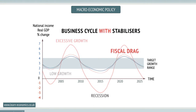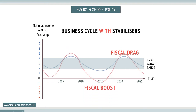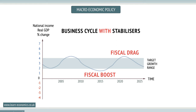Fiscal drag means that progressive taxes and welfare benefits combine to slow an economy down if it is growing too quickly. Fiscal boost stimulates the economy automatically by using progressive taxes and benefits to pump money back into an economy when it is slowing down.